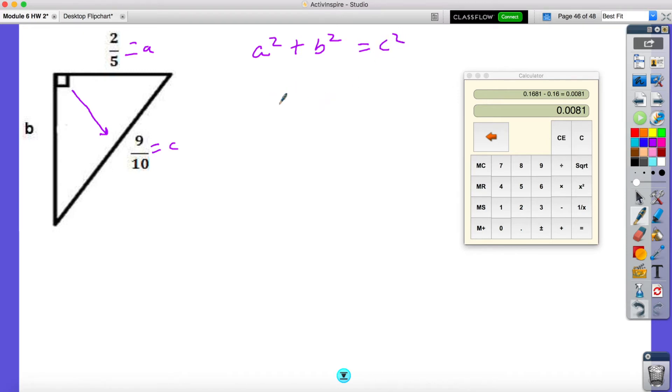So this would look like then 2 fifths to the second power plus B squared is equal to 9 tenths to the second power. I'm going to distribute this to the top and the bottom. So 2 times 2 is 4, 5 times 5 is 25 plus B squared. And then 9 times 9 is 81, and 10 times 10 is 100. So then what I'm going to do is multiply the numerator and the denominator by 4 to get 16 over 100 plus B squared is equal to 81 over 100.